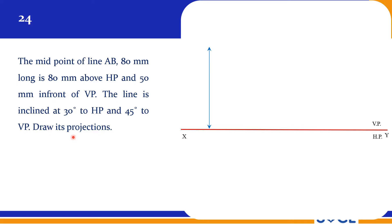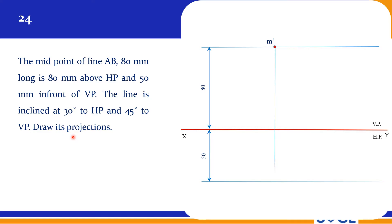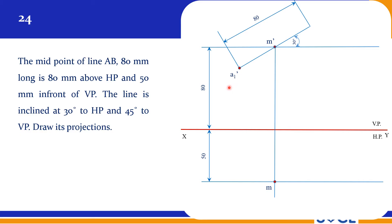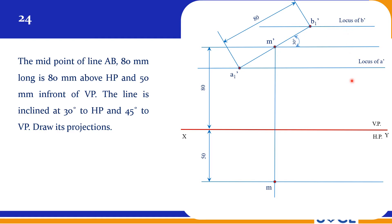The midpoint of line AB, 80 mm long, is 80 mm above HP and 50 mm in front of VP. Mark midpoint M' and corresponding M on the same projector. Since the line is 80 mm long, take 40 mm on each side of the midpoint along the 30-degree line. These endpoints are called A1 dash and B1 dash. This gives the locus of B dash and locus of A dash, because both are not fixed ends — only M is the fixed point — so we get two locus lines.